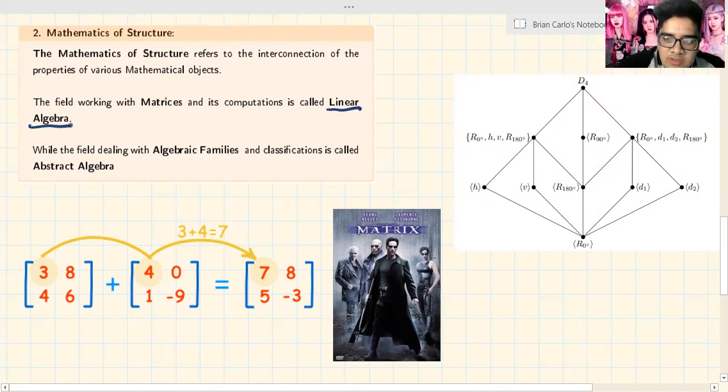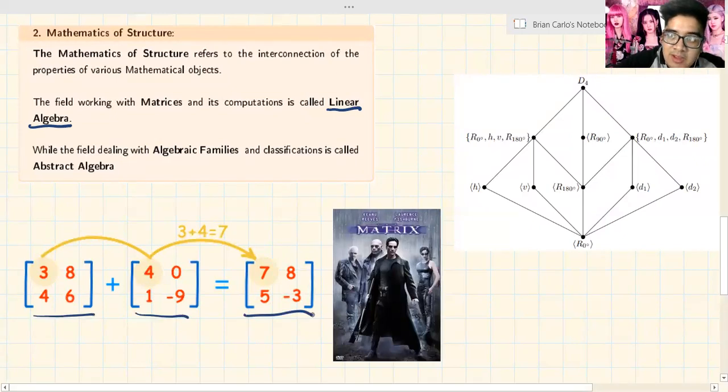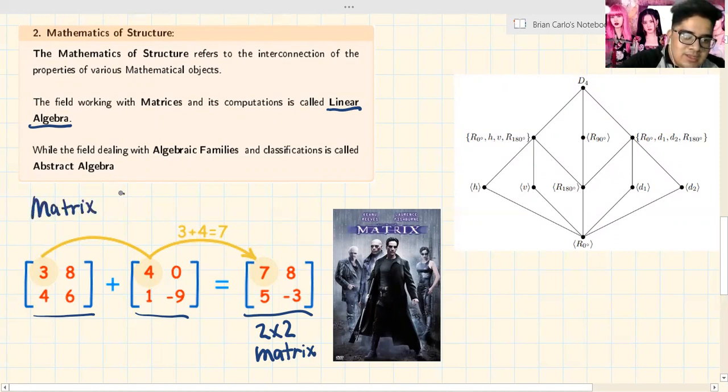I know that you have maybe seen The Matrix movie by Keanu Reeves. But that's not what I'm talking about. The matrices that I'm talking about is of this form - rectangular objects with numbers inside. This is a two by two matrix. And this operation right here is matrix addition. You just add the corresponding places. It's straightforward, right? Matrix addition for you all.